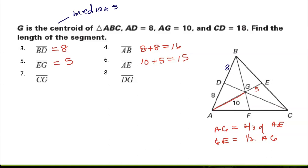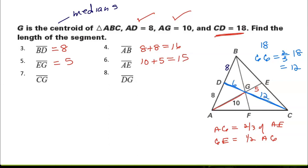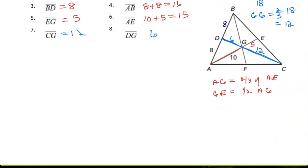They want BD, which equals 8. AB equals 8 plus 8, or 16. EG equals 5. AE equals 10 plus 5, or 15. For CG: if CD is 18, GC equals two-thirds of 18, which is 12. So if CG is 12, then DG is 6. If you have forgotten how to do this, go back and check your notes for the section.